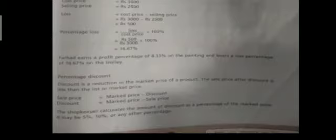The next term is percentage discount. Discount is basically a reduction in the market price of a product. For example, if a refrigerator's market price is 50,000 and there is a 50 percent discount, that discount is a reduction in the market price. The sale price after discount is less than the listed price of the product.